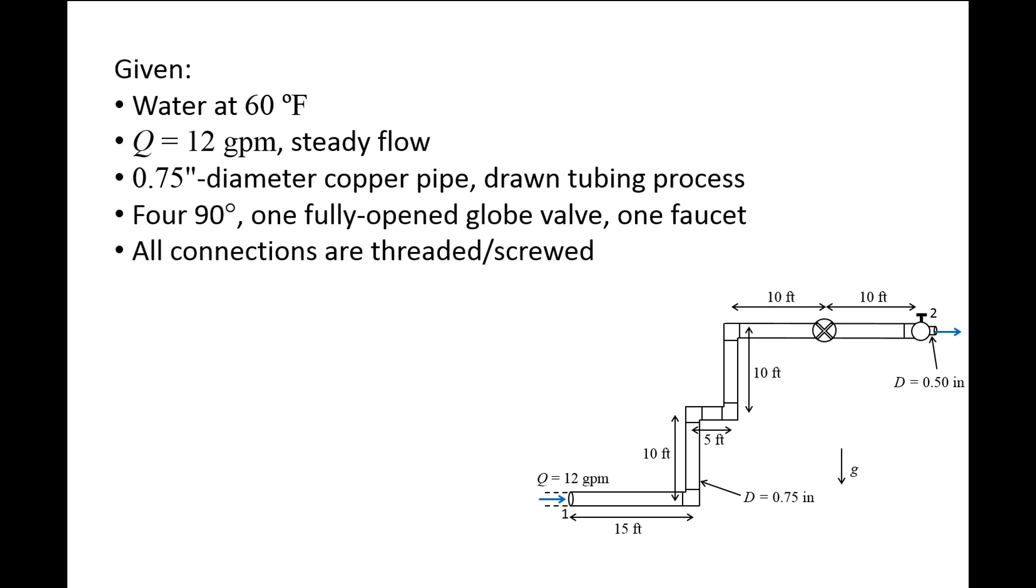There are six sections of pipe of various lengths, which are connected by four 90-degree elbows and one fully open globe valve. The pipes are made of copper using a drawn tubing process, and their diameter is 3/4 inch. The faucet has an exit diameter of 1/2 inch. All parts of the pipe system are connected by screwing the pipes into the components. We call this type of connection threaded or screwed. We wish to find the gauge pressure at 1 needed to produce the flow rate of 12 gallons per minute.